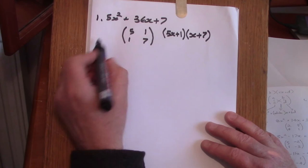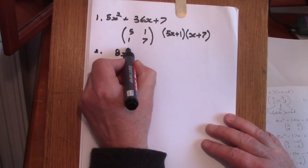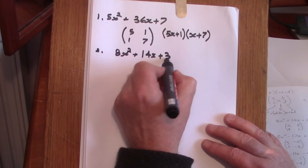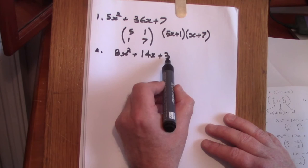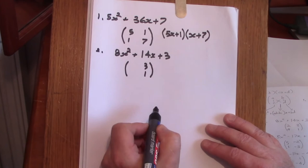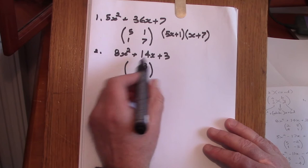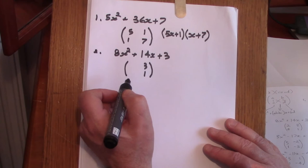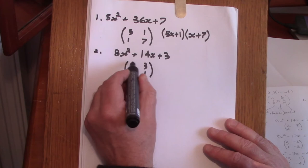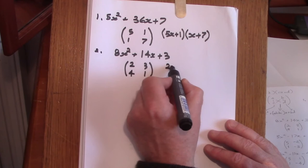Example two is 8x squared plus 14x plus 3. The last coefficient is prime so in the matrix we must have a 3 and a 1. With 8 we have two pairs of factors: 1 and 8, and 2 and 4. We need to find which leads to a cross product that adds to 14. The only possibility is 4 and 2, because 3 times 4 is 12 and 2 times 1 is 2, giving 14. That immediately leads to (2x + 3)(4x + 1).